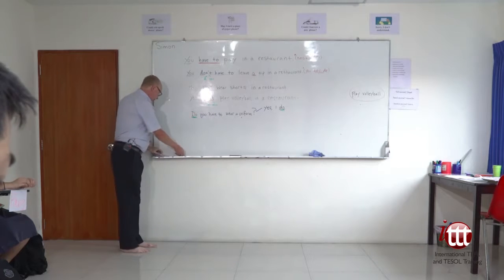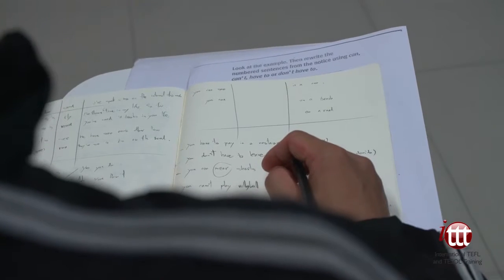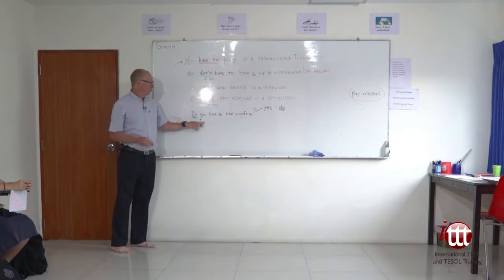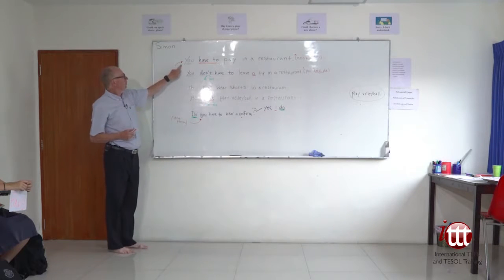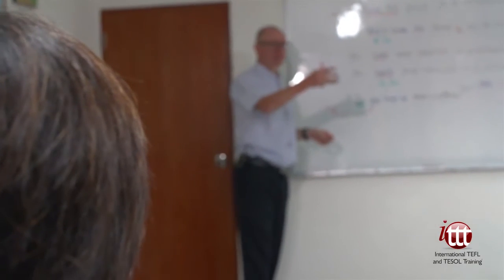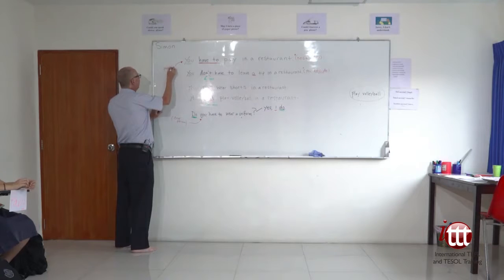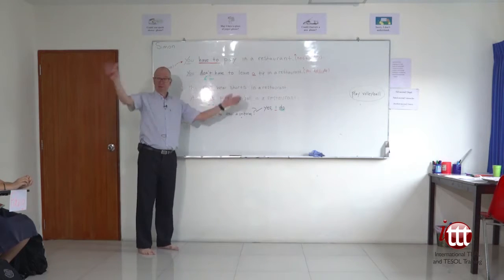Now, this U. This is one person. Do you have to wear a uniform? Yes, I do. What about this? You have to pay in a restaurant. Is it only one person? No. So, who said it before? People. People. Yeah. So, this is one person. Only do you have to wear a uniform. This is, you have to pay in a restaurant. Everybody.